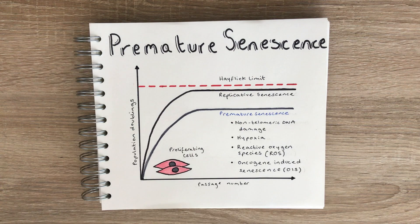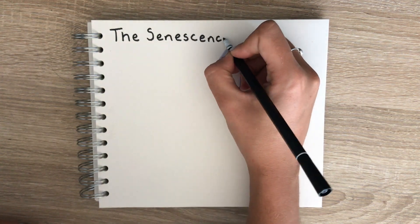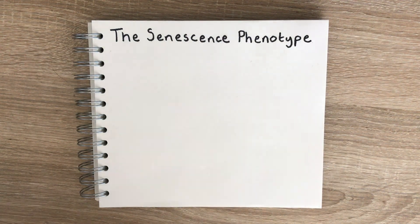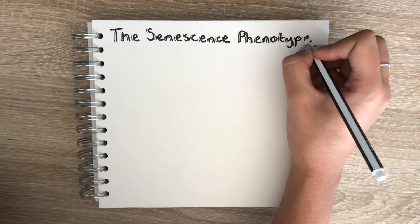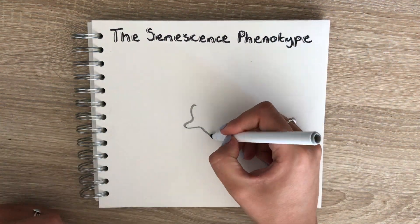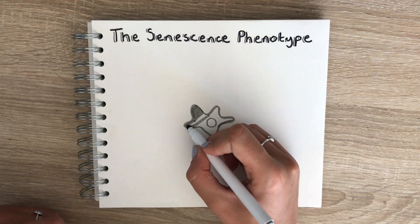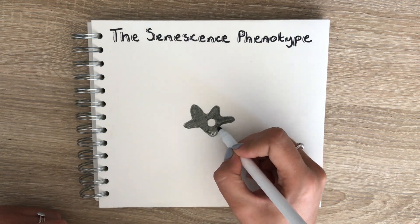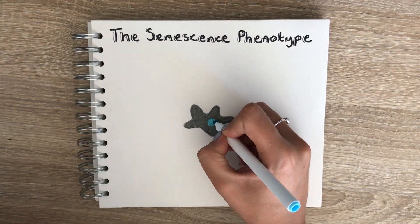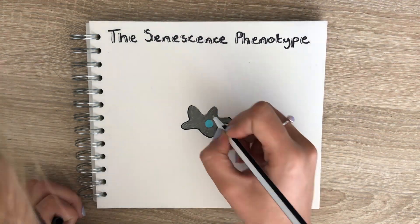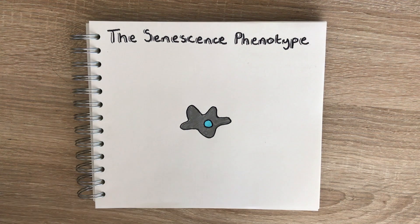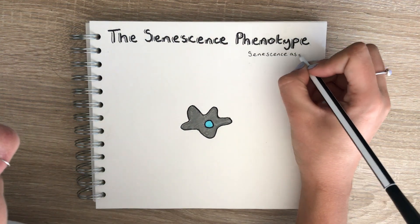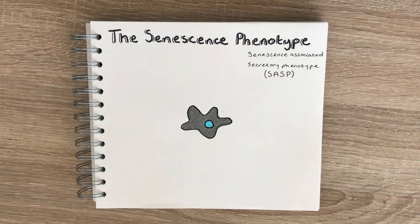Now that I've explained the different types of stimuli and mechanisms behind how cells become senescent, I'll explain a bit more about the senescent phenotype — what they look like, how they behave, and what the consequences are. Senescent cells tend to be flat and enlarged in size. They also secrete a complex pool of proteins such as pro-inflammatory cytokines, chemokines, growth factors, and proteases, and collectively these are known as the senescence associated secretory phenotype, or SASP for short.